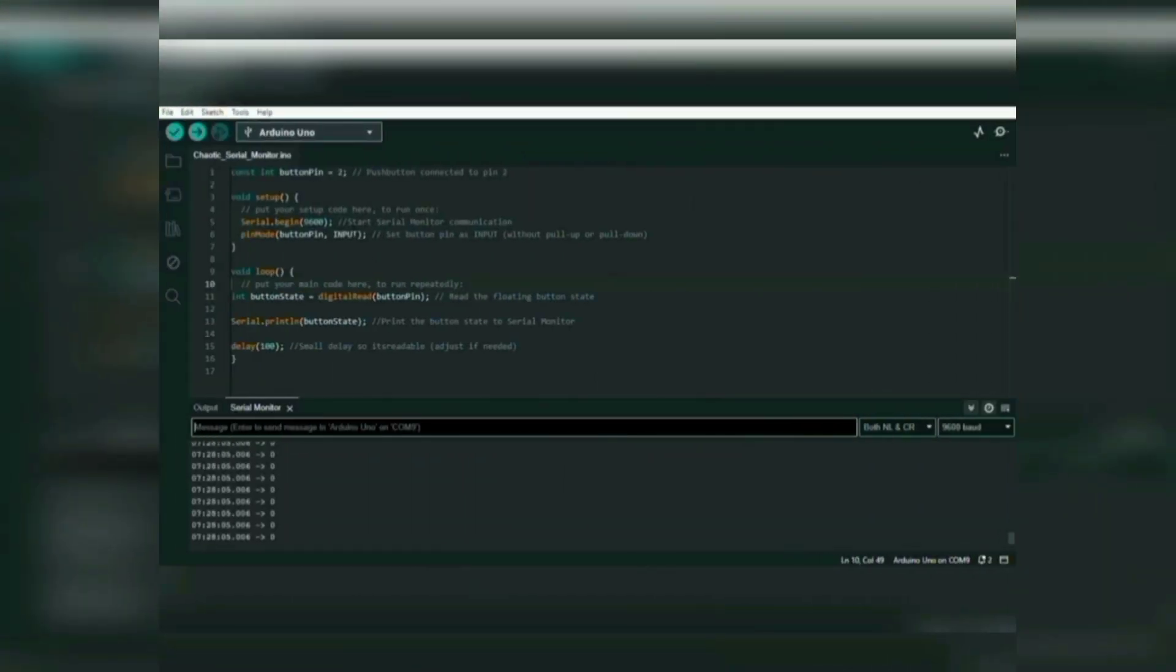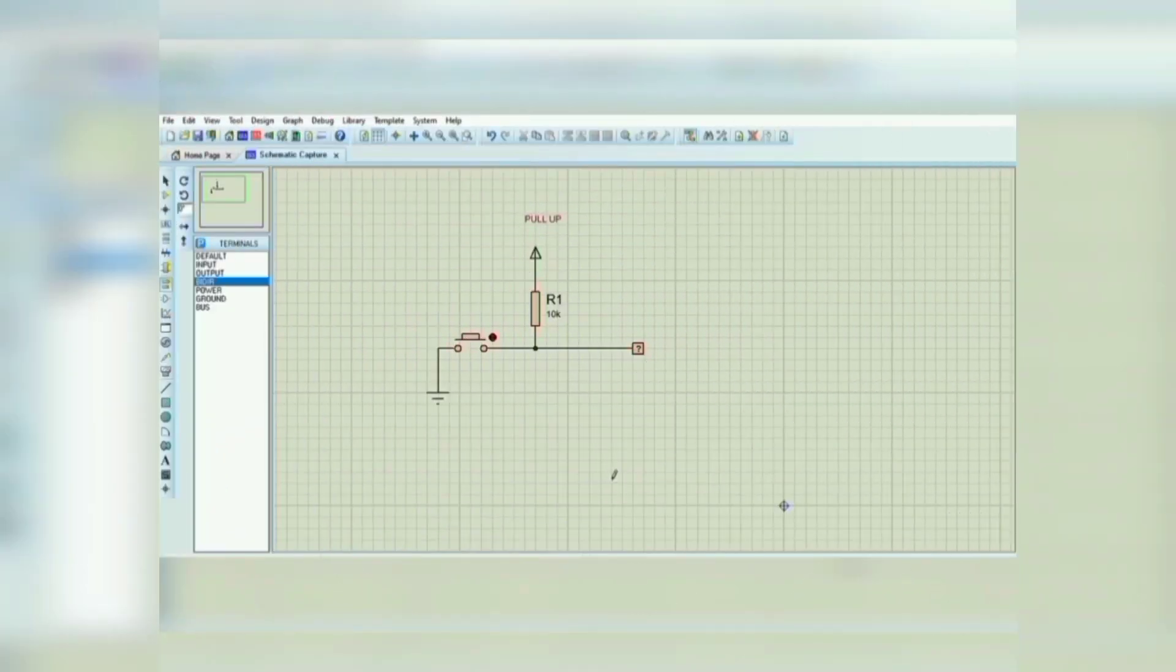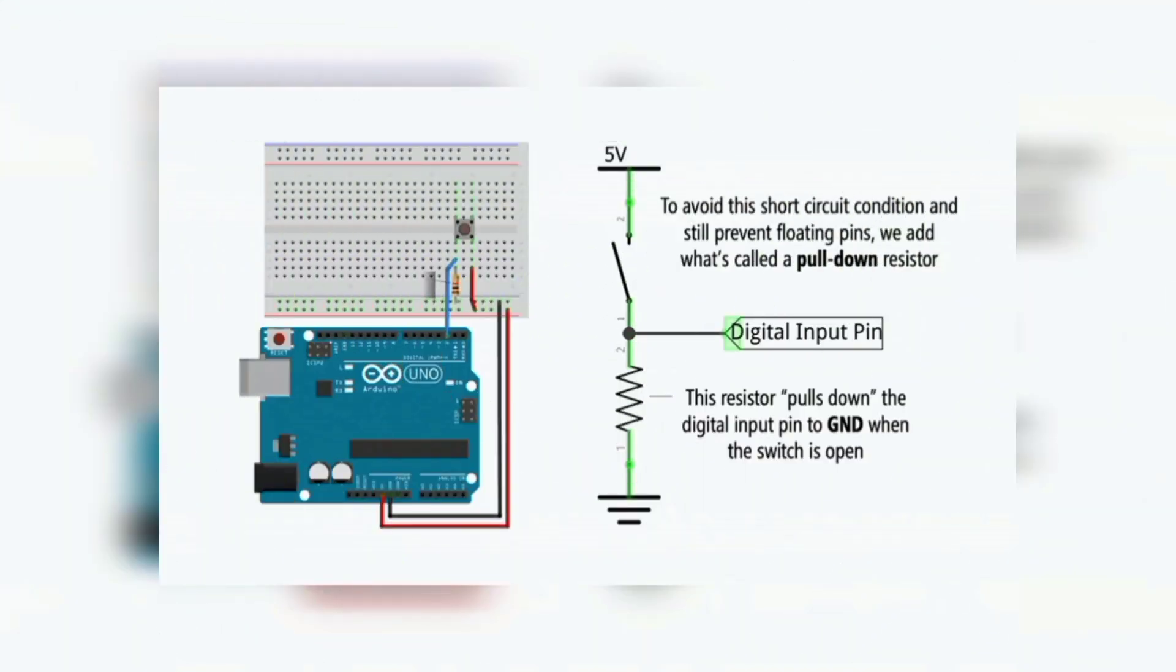To fix this we will use the concept of pull-up and pull-down resistor to give a default or known state. So guys, here is a pretty simulation of the pull-up resistor and this is the pull-down resistor. To avoid short circuit conditions you get to use the pull-down resistor.